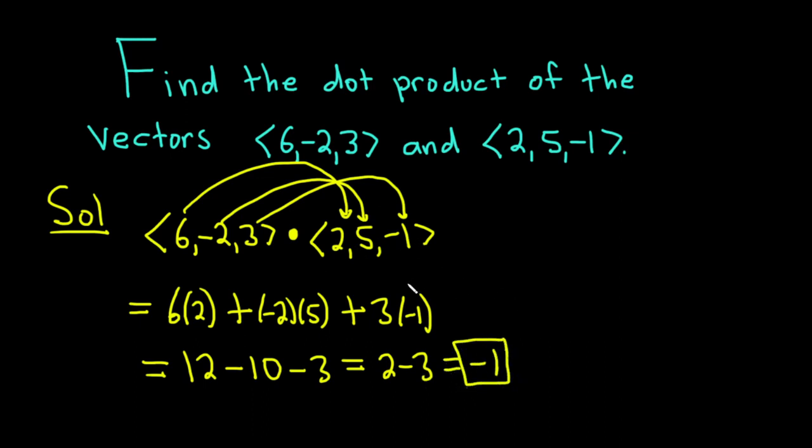If you have two vectors and you take the dot product and you get 0, then the vectors are actually perpendicular. Another word for perpendicular is orthogonal. If you don't get 0, they're not orthogonal. In this particular example, these vectors are not orthogonal.